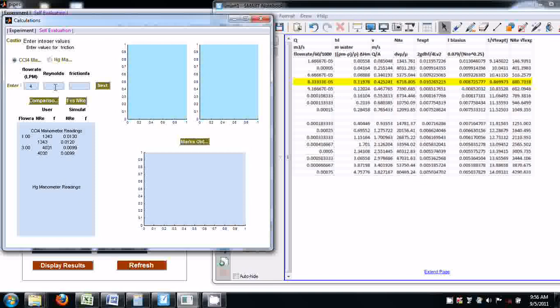The friction factor is 0.0099. Enter next. All these values can be checked out here. Can be rounded off to the nearest integer.